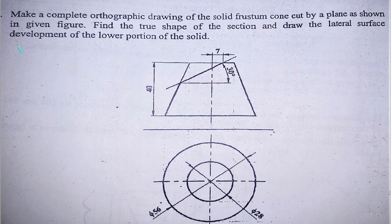Hello everyone. Today we are going to draw the surface development of the truncated cone. The question asks us to make a complete orthographic drawing of a solid frustum cone cut by a plane as shown in the given figure, find the true shape of the section, and draw the lateral surface development of the lower portion. Before doing this, let's know something about surface development.